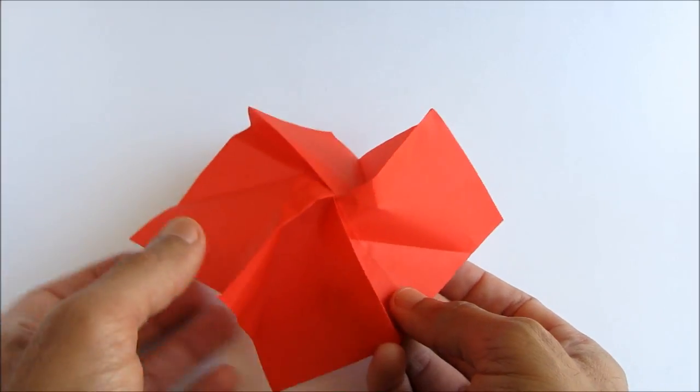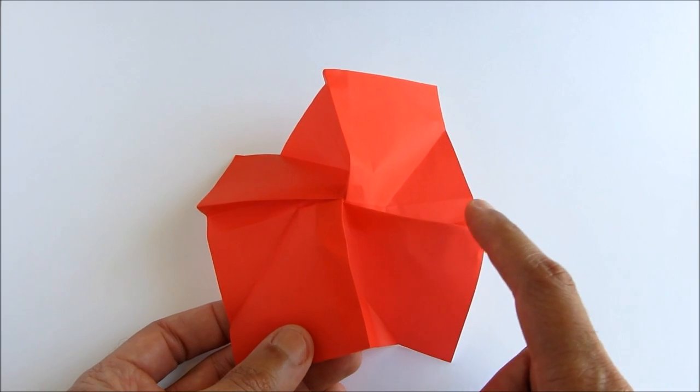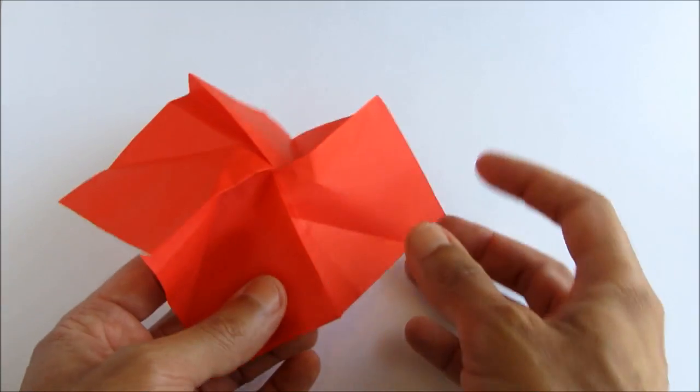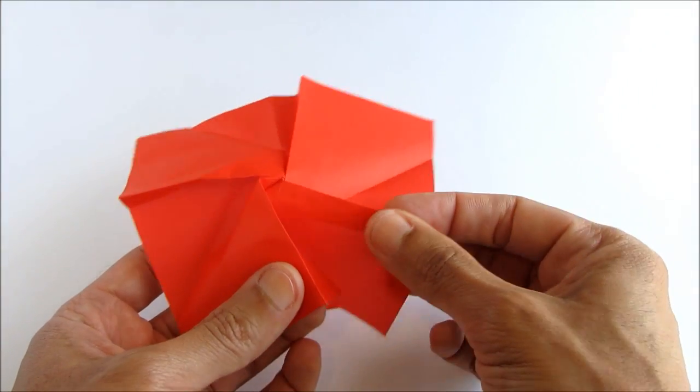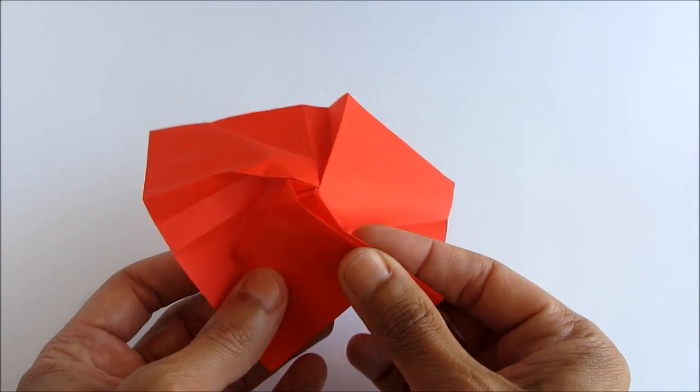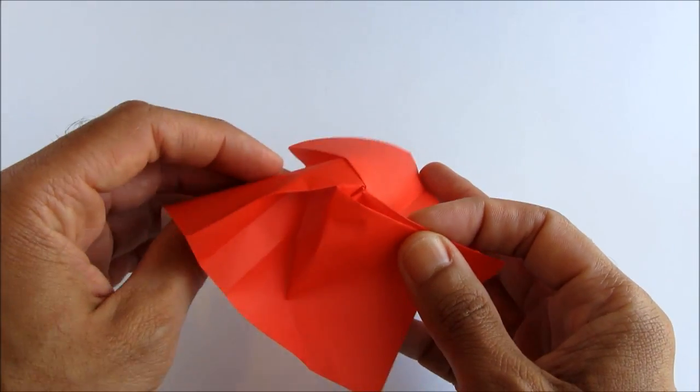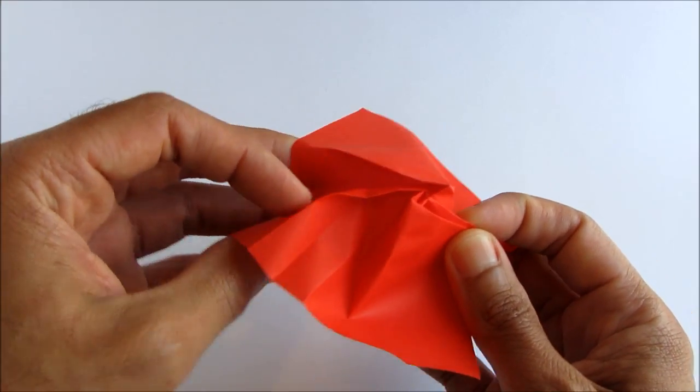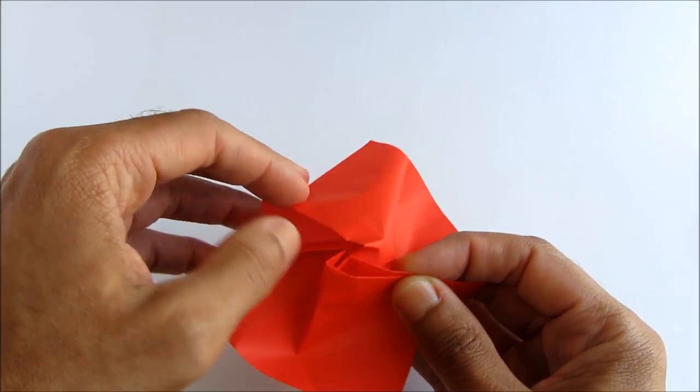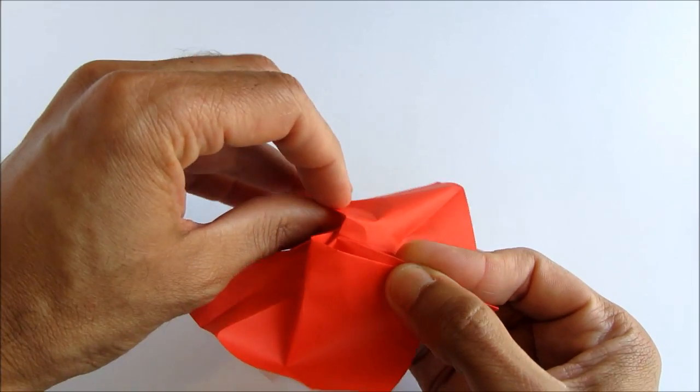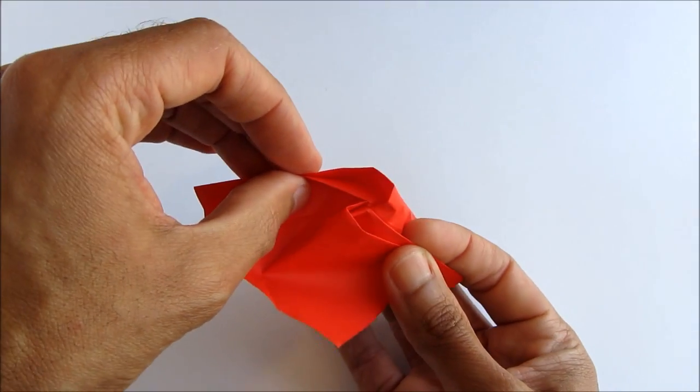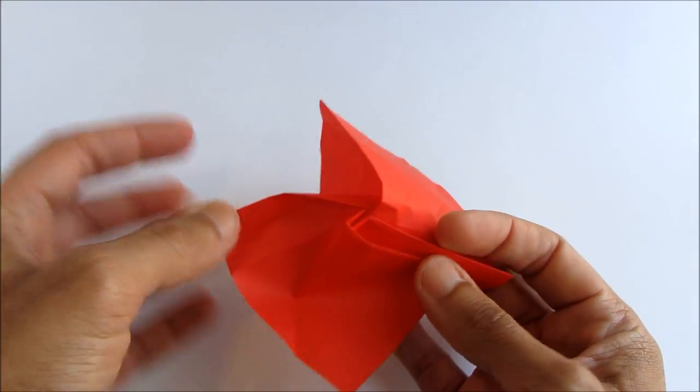And then rotate the paper 90 degrees. And do the same thing for the other two edges. So this edge will fold onto its neighbor. And do the same on the opposite side of the paper. And again, it will not look perfect. So that's fine, we're just trying to soften up the paper. So let that unfold.